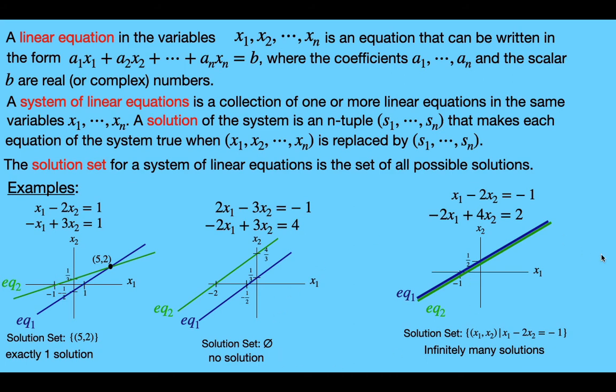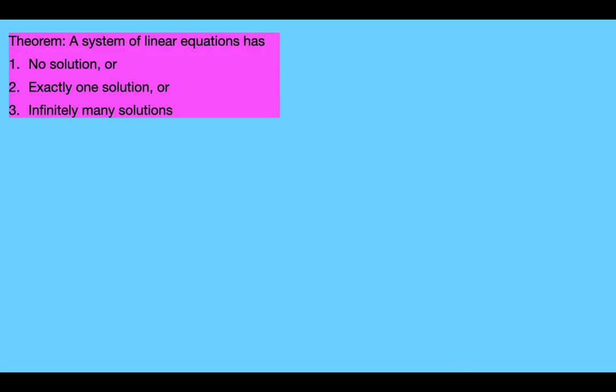But in fact, this is true for all systems of linear equations, not just in two variables. We have a theorem that says a system of linear equations has either: (1) no solution, (2) exactly one solution, or (3) infinitely many solutions. I'm going to go through a proof of this, but feel free to skip it.